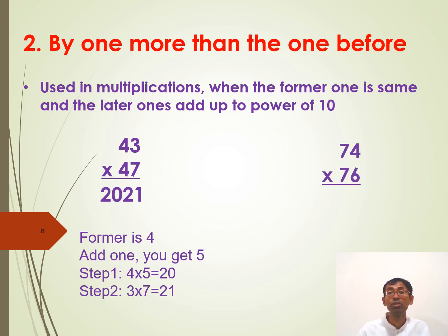Same. You can use the same formula to solve this one also. Here, the former one is seven. One more than seven is eight. So, the first step is seven times eight is fifty-six. And step two, you simply multiply the latter ones. Four times six is twenty-four. You get the answer.